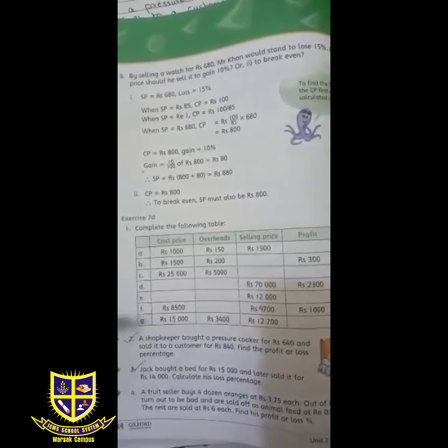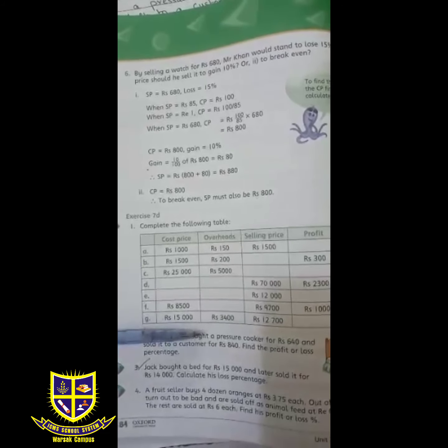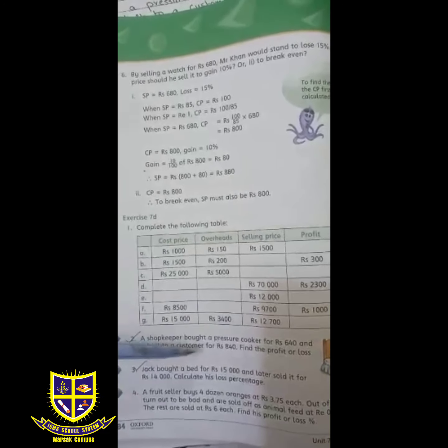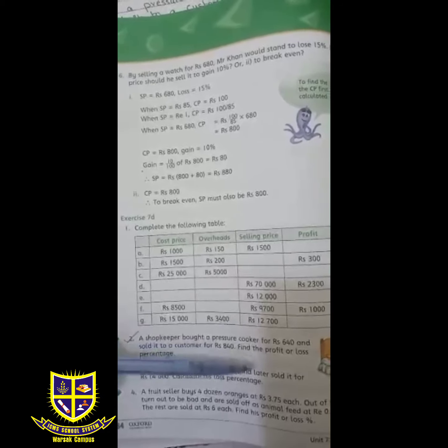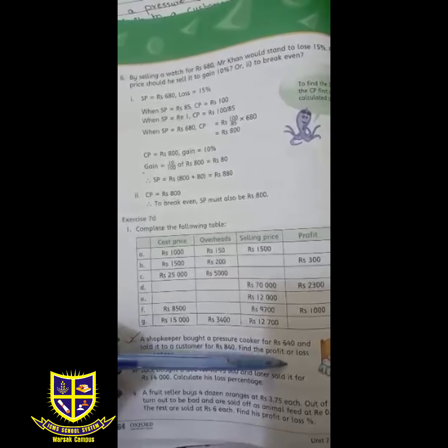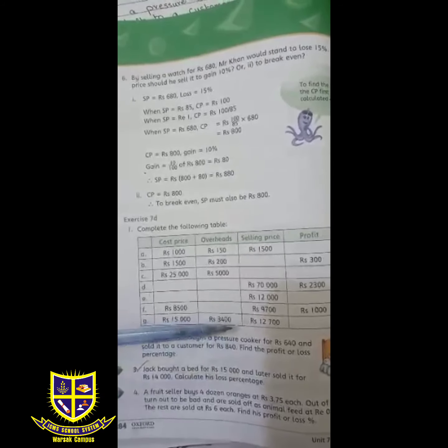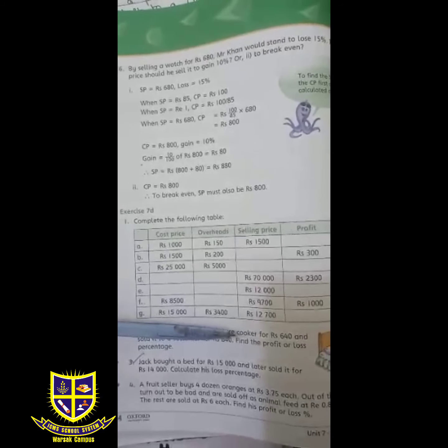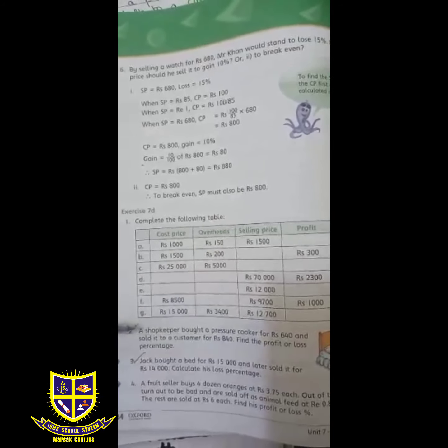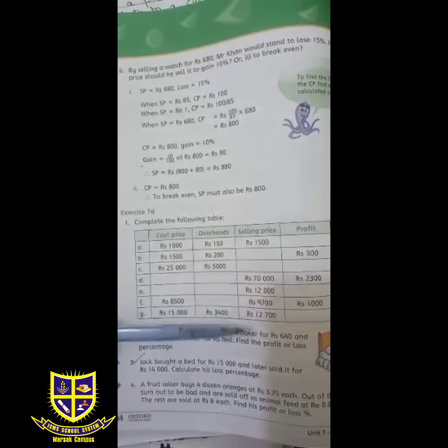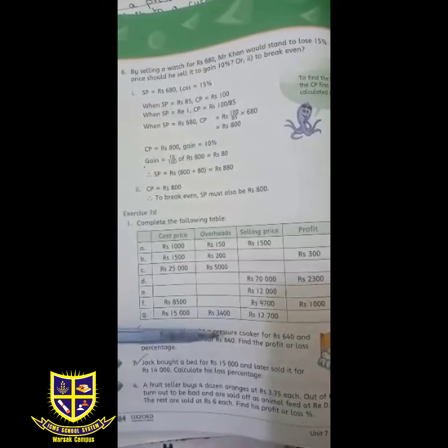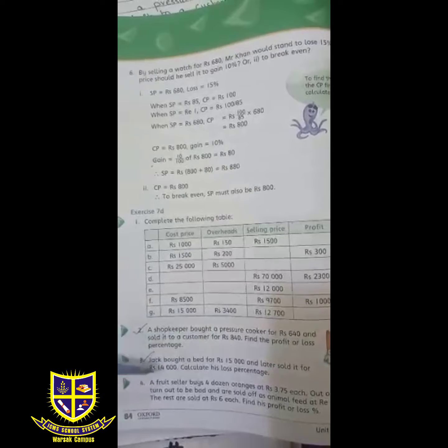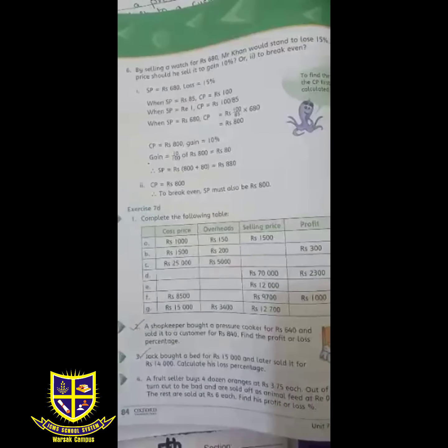In this question, a shopkeeper bought a pressure cooker for 640 and sold it to a customer for 840. Now find the profit or loss percentage. To find profit or loss, we will identify the cost price which is 640 and selling price which is 840. So now take out your copies, we will solve this sum on copy.